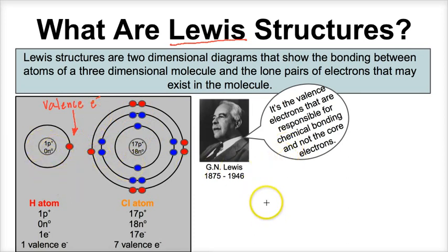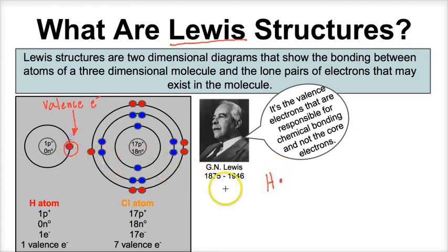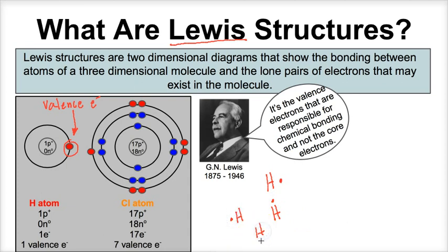So instead of drawing a Bohr model for hydrogen, G.N. Lewis created the Lewis structure, or Lewis dot diagram, of hydrogen. This one little electron is representative of hydrogen's one valence electron. We can put the dot on any side of the symbol — all arrangements are equivalent. If we just rotate hydrogen in three-dimensional space, we can end up with any of those four arrangements.